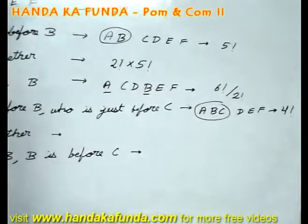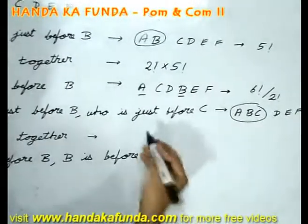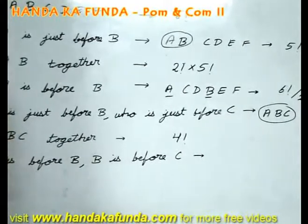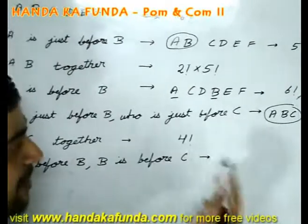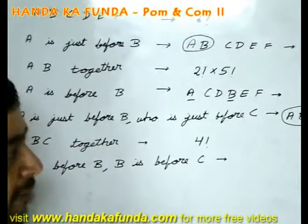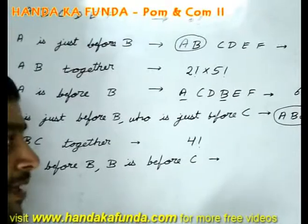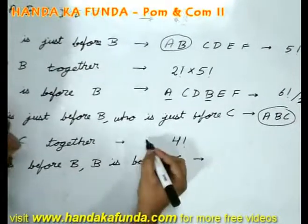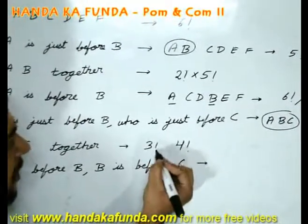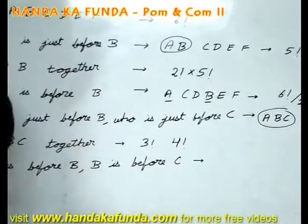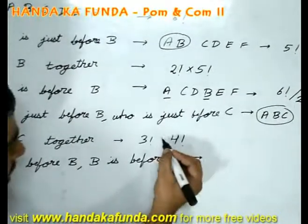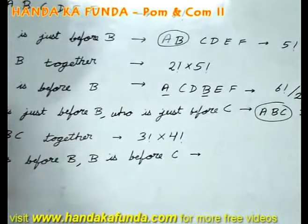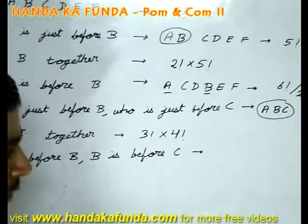How about A, B, C together? Once again you have 4 entities and they can be arranged in 4 factorial ways. But A, B, C can arrange among themselves — it could be ABC, ACB, BAC, BCA, CAB, or CBA. There are 3 factorial ways in which A, B, C can arrange among themselves. Since both are happening simultaneously, it will be 3 factorial × 4 factorial.